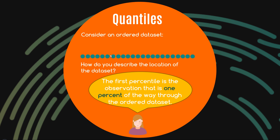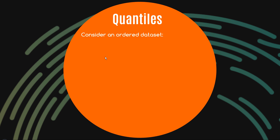Percentiles work the same way — the first percentile is the observation that's one percent of the way through the ordered data set, essentially splitting the data set into hundreds. In a small data set, you wouldn't have enough observations to meaningfully show the first percentile, but you could construct something like the 36th percentile, which is 36 percent of the way into the data set. Quantiles make more sense when you have a larger data set.